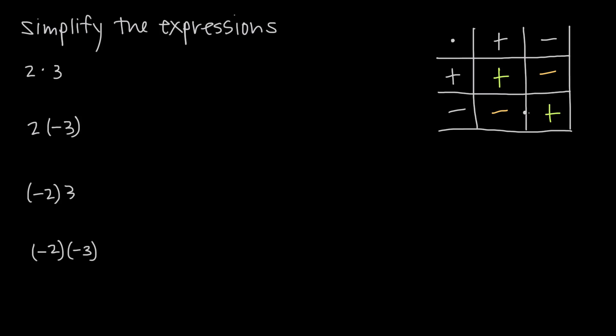If, on the other hand, we multiply a negative number by a positive number, we get a negative number. And if we multiply a positive number by a negative number, we also get a negative number.